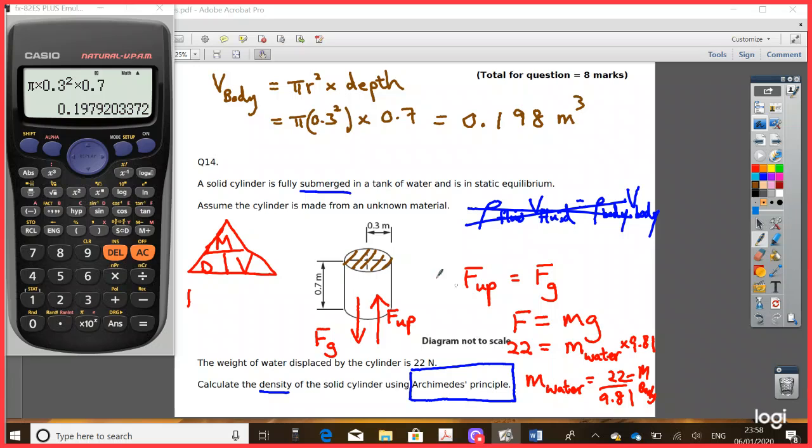And then you go ahead and find the density now. So the density ρ of the body or the cylinder is equal to the mass of the body divided by the volume of the body.